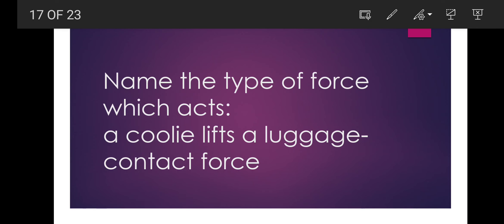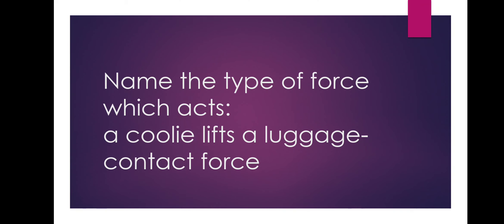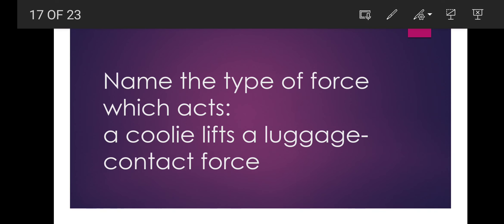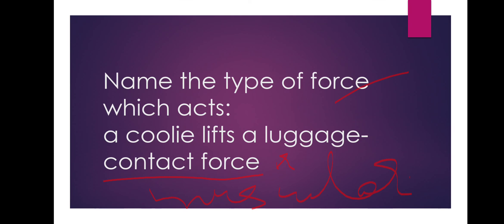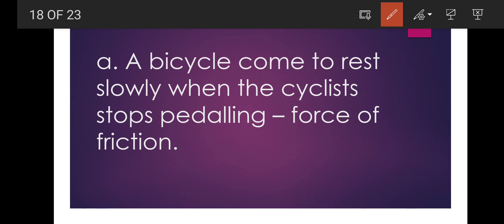Name the type of force which acts in the following cases. First case: a coolie lifts a luggage — contact force, or you can also write muscular force. Next: a bicycle comes to rest slowly when the cyclist stops pedaling — force of friction. Next: a stone falls from a roof — gravitational force, because when anything comes down, gravitational force is acting on that body.